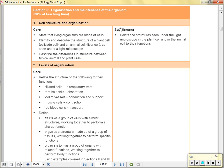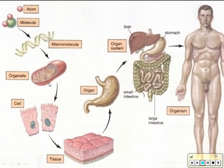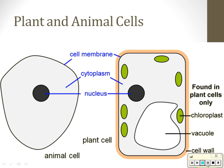There is a hierarchy. Atoms make molecules, molecules make macromolecules. Many organelles together make a cell. Many cells working together form a tissue. Many different types of tissues together make an organ. Many different types of organs working together for one outcome is an organ system. And many organ systems together makes an organism.